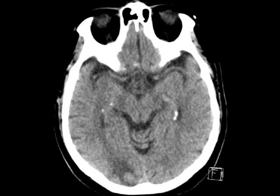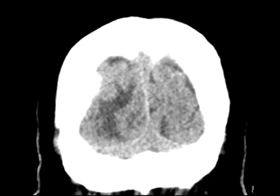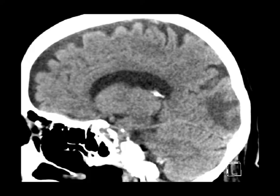Non-contrast images of the head show hypoattenuation in the subcortical white matter of the right occipital lobe. Contrast enhanced images show avid enhancement of a nodular mass adjacent to this region of hypoattenuation, which could have easily been confused for cortex on the non-contrast CT images.